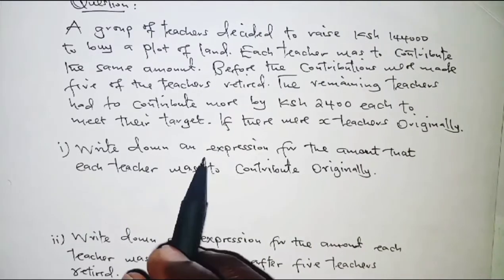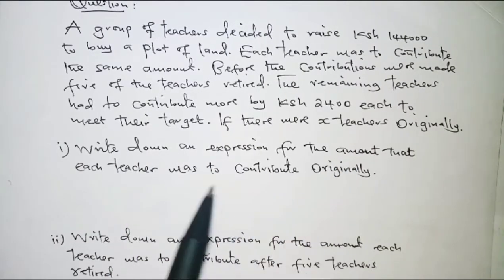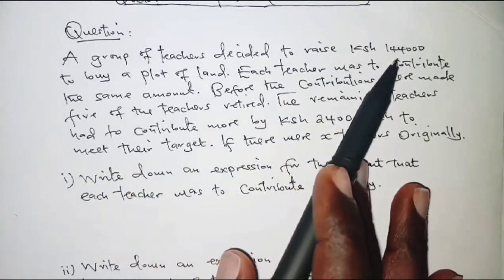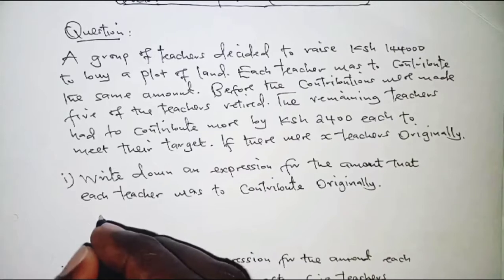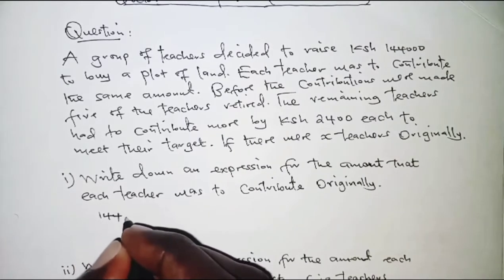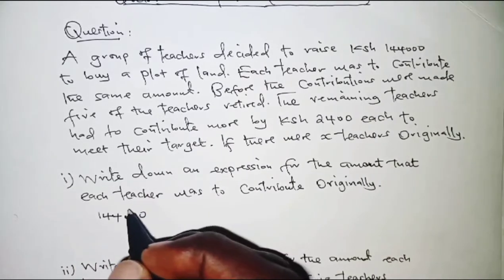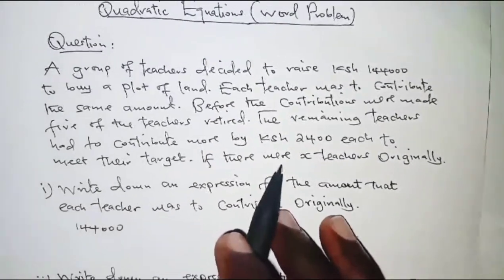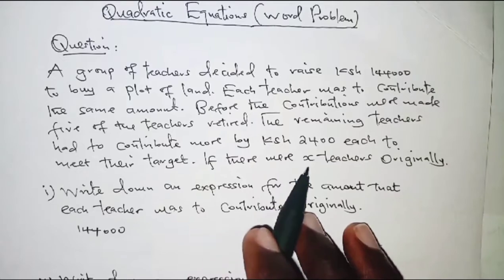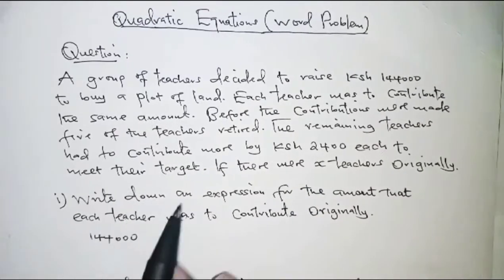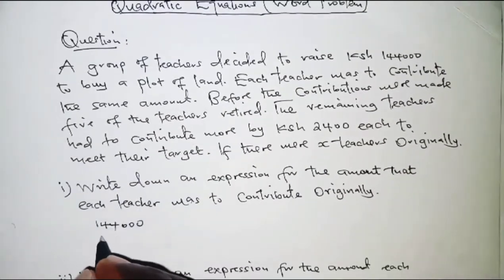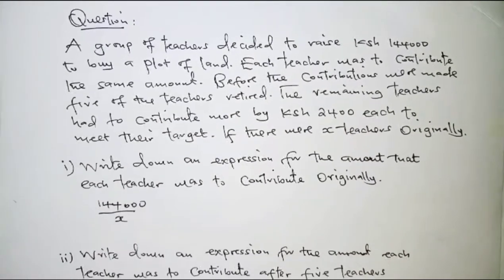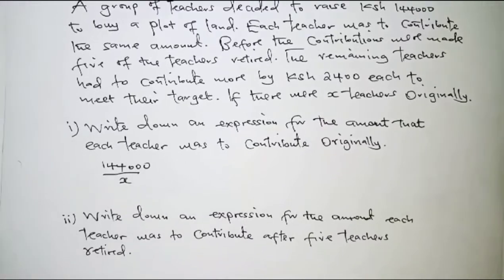For the first part, we are required to write an expression for the amount that each teacher was to contribute. The total amount to be raised is 144,000 and this is to be distributed amongst x teachers. So we have 144,000 divided by x, and that gives us what each teacher was to contribute originally.